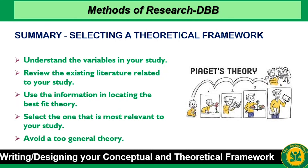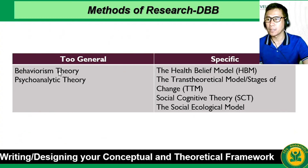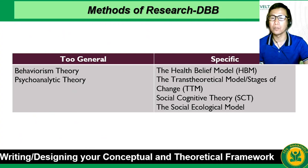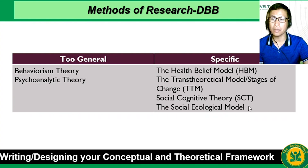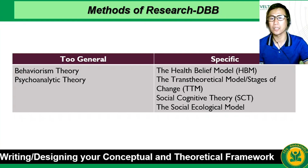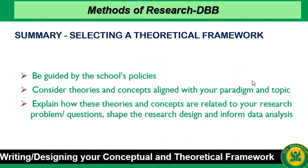Understand the variables in your study. Review the existing literature. Use the information from the literature in locating the best fit theory — start with five theories, then find the best fit, and select the one most relevant to your study. But avoid a too-general theory — for example, behaviorism theory or psychoanalytic theory. It must be specific so you can contextualize it and relate it to your research. More specific theories include the health belief model, TTM, SCT, and the socio-ecological model for the environment. Be guided by the school's policy in identifying the theoretical framework.